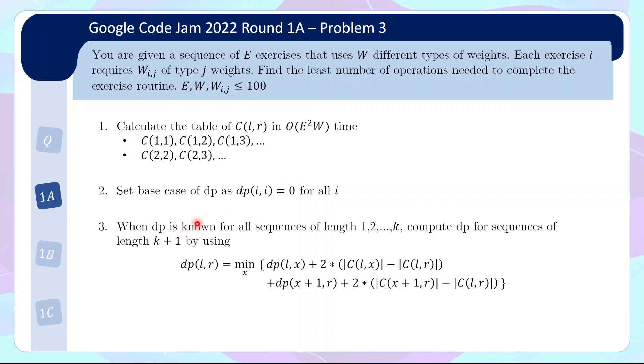So once we know the DP for sequences of length up to k then we can basically compute DP for sequences of length k plus one by using the recursion formula because when we put a value of x to break it into two strictly smaller sub problems we do know the answer for strictly smaller sub problems. So we just do this in increasing length of sequences. This will take O of E cubed time because the minimum part ranges over E values of x and then there's E squared sub problems.